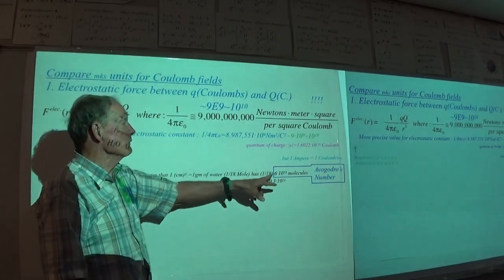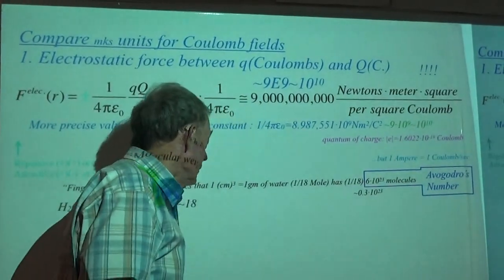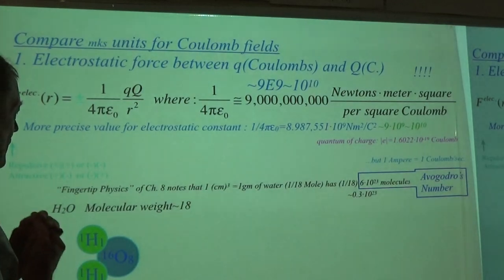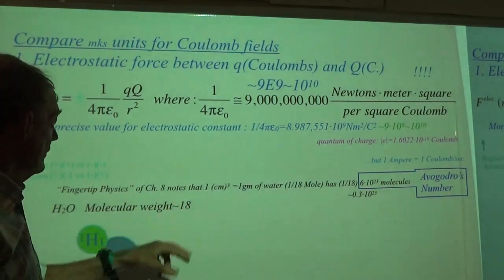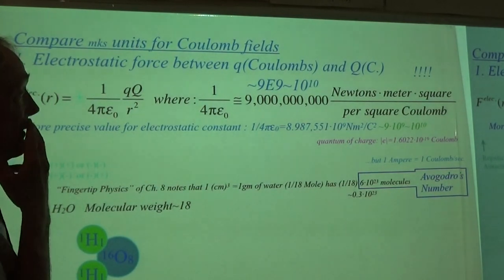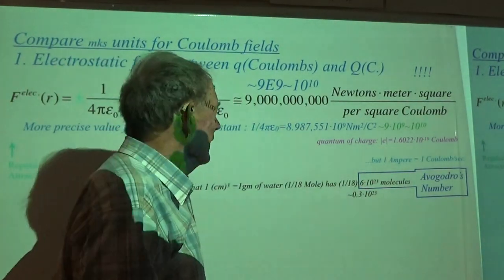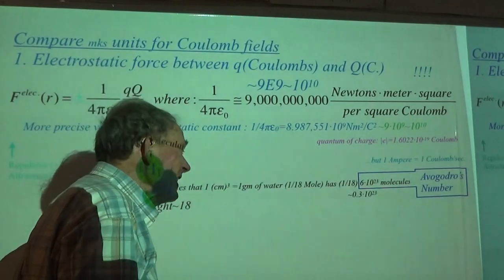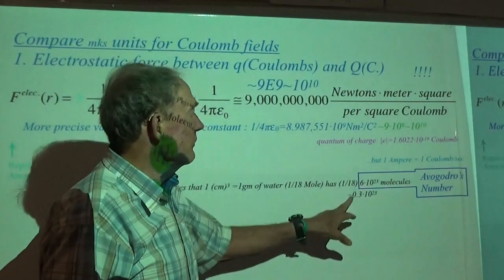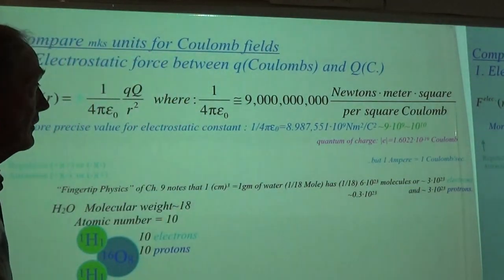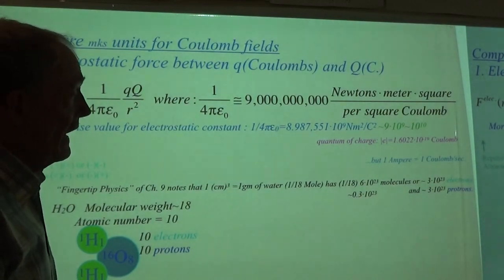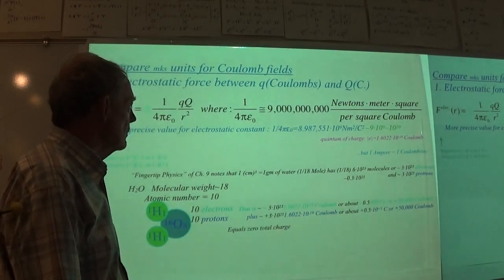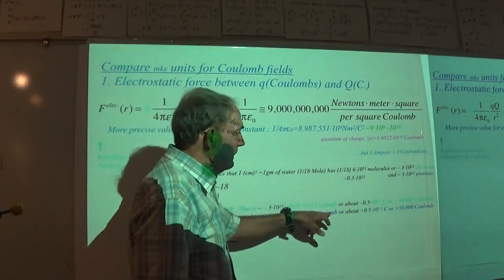What I'm doing here is just reminding you of your freshman chemistry. We've got the Avogadro number for a mole. We've got a water molecule. You're mostly water, so we can use water as a good indicator of what's going on inside your finger. Molecular weight of 18 — two hydrogens and one oxygen. One cubic centimeter is one gram of water, that's one eighteenth of a mole — one eighteenth of Avogadro's number. That's 0.3 times 10 to the 23 particles. With ten electrons and ten protons, that works out to about fifty thousand coulombs in your fingertip.